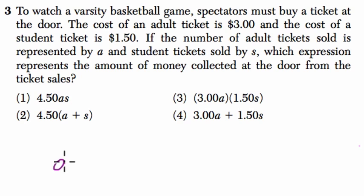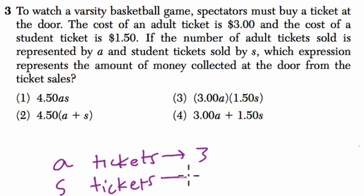So let me jot this down. Adult tickets cost $3, and student tickets, S tickets, cost $1.50. I'm just going to notice, okay, students are cheaper. That makes sense.